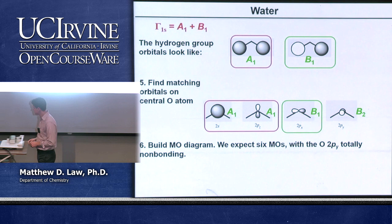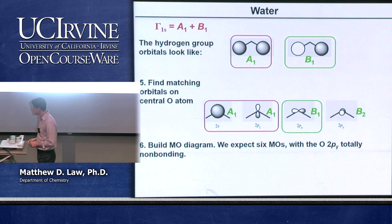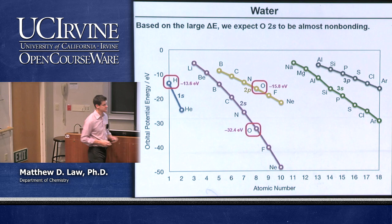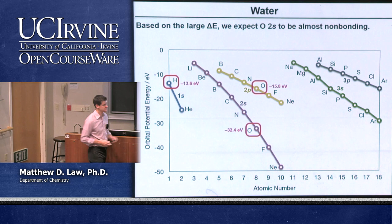We should have some bonding, some non-bonding, and some anti-bonding in this molecule. Remembering the relative energies: oxygen 2s is deep in energy and won't interact substantially with the hydrogens. The main interaction is between the group orbitals and the oxygen p orbitals. Let's build the MO diagram.